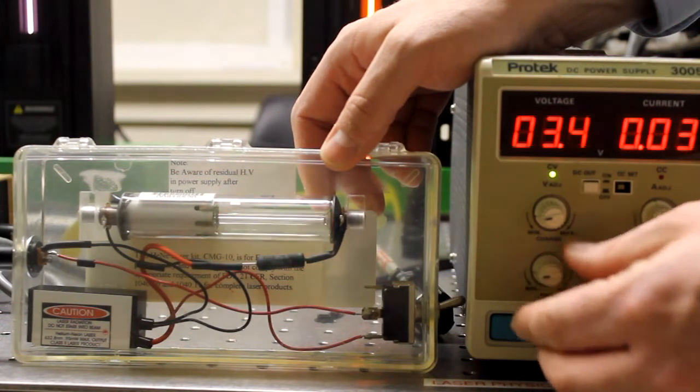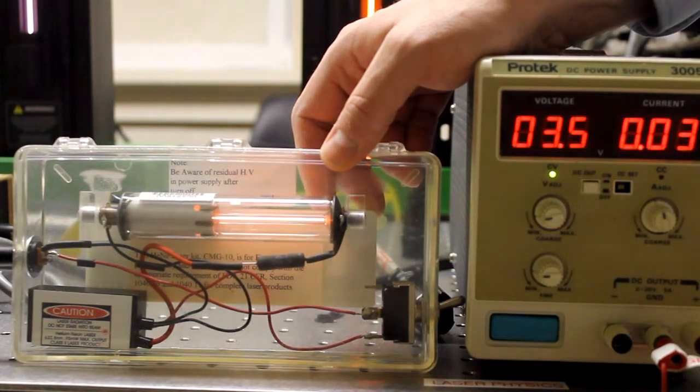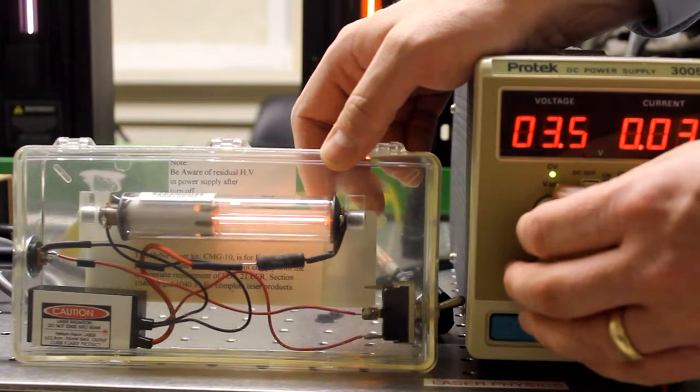As we apply increasing voltage to the laser in a box, its behavior changes. First we see occasional faint flickers of light, increasing in intensity and frequency with more voltage.